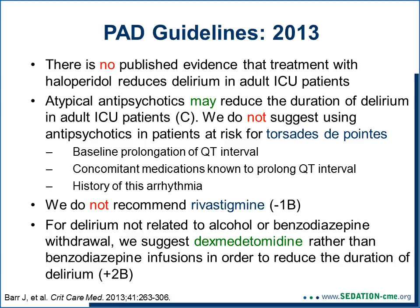When it comes to treating delirium, there is very little evidence. There is no published evidence that haloperidol reduces delirium duration. There is weak level C evidence that atypical antipsychotics may reduce the duration of delirium. These medications should be used with caution in patients at risk for torsades, such as those with QT prolongation or a history of torsades. We do not recommend using rivastigmine. When delirium is related to alcohol or benzodiazepine withdrawal, we suggest dexmedetomidine rather than benzodiazepines to reduce delirium duration.